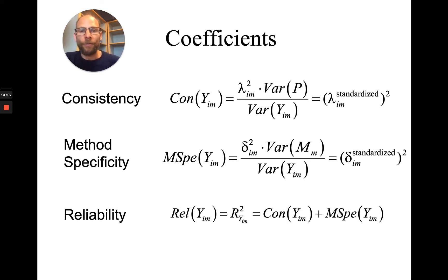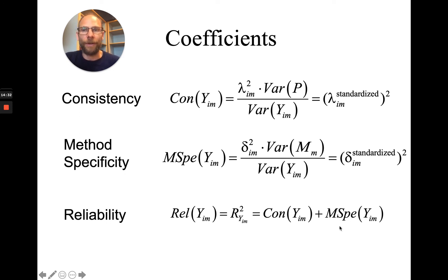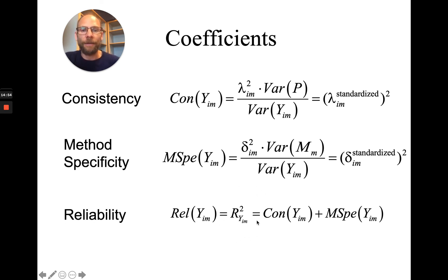In this model, those two coefficients for a given variable add up to reliability. That shows that we're not ignoring a reliable source of variance — method specificity is not confounded with error, but is a separate source of variance that becomes part of the reliability estimation. You can calculate reliability as the sum of consistency plus method specificity for the non-reference indicators. For the reference indicators, you only have consistency, since those indicators don't have a method factor. The reliability coefficient is the same as what programs like M+ give as R-squared for the observed variables.